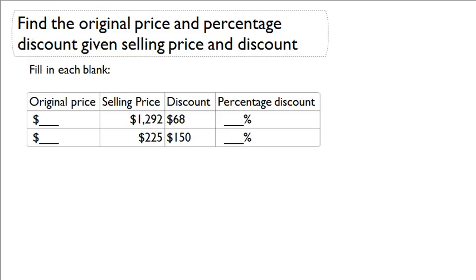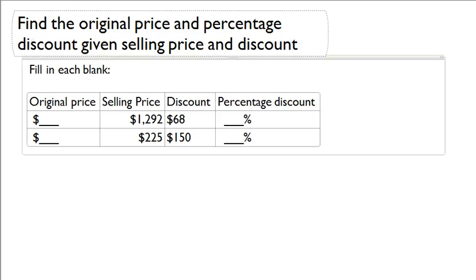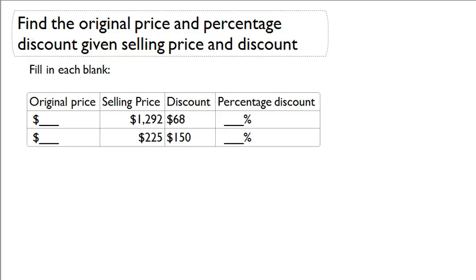Find the original price and percentage discount given selling price and discount. In this table we're given the selling price and the discount, but we don't have the original price or the percentage discount.